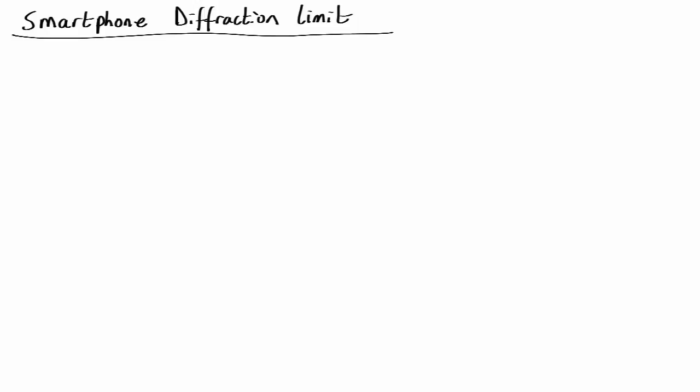We've seen that for a camera that uses light, there is a fundamental limit to what angle you can resolve. That angle in radians is roughly speaking the wavelength of the light you're using divided by the diameter of your lens. So what is this limit for a smartphone camera, and how does it compare to the limit of about 2×10⁻⁴ radians that we get from the pixel size?